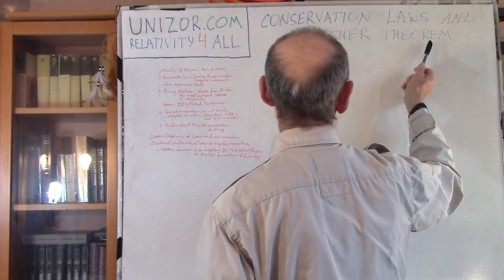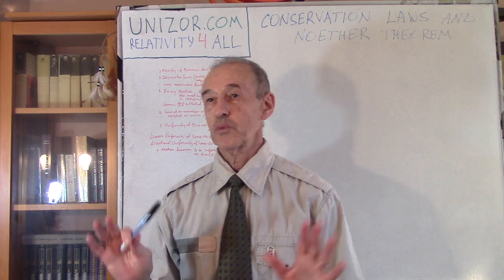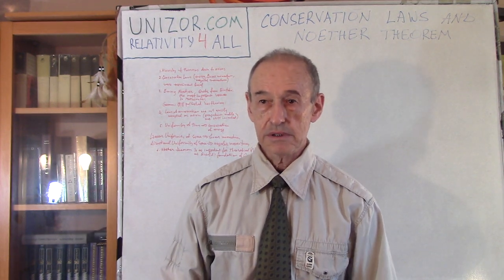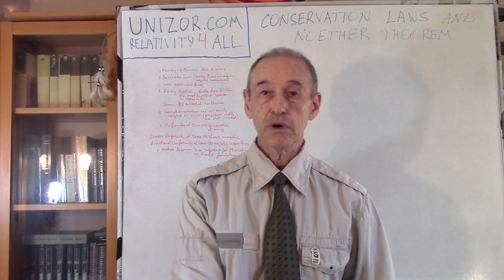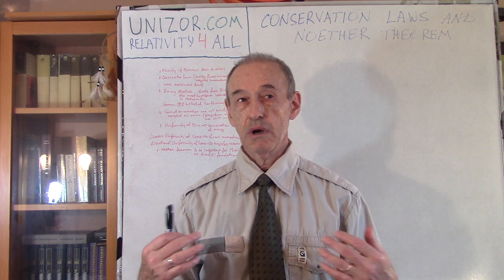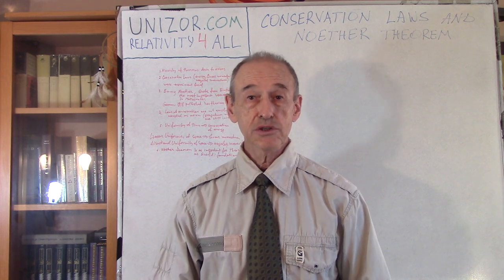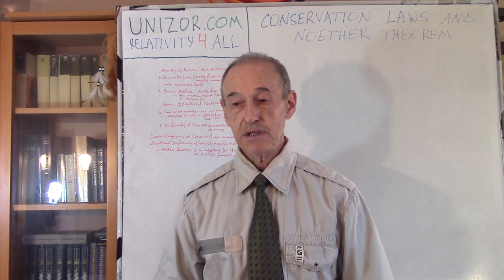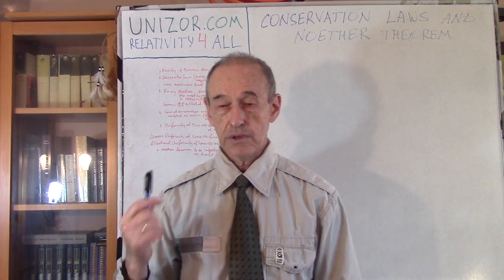This lecture is called Conservation Laws and Noether's Theorem. We will start with the idea that every statement is supposed to be based on something else — logically derived from it — and whatever that something else was, it should be derived from before and before, down to axioms. One of the most important properties which we in physics accept as given are conservation laws: conservation of energy, conservation of linear momentum, and conservation of angular momentum. These are the properties used in all the courses — Physics for Teens and obviously in relativity as well.